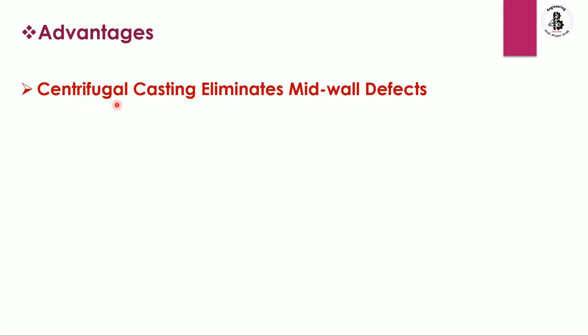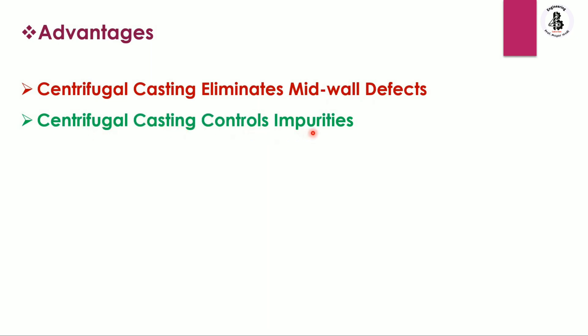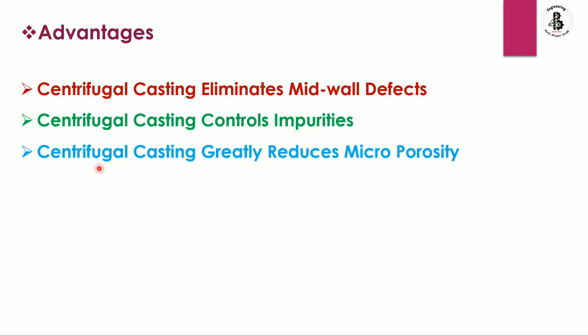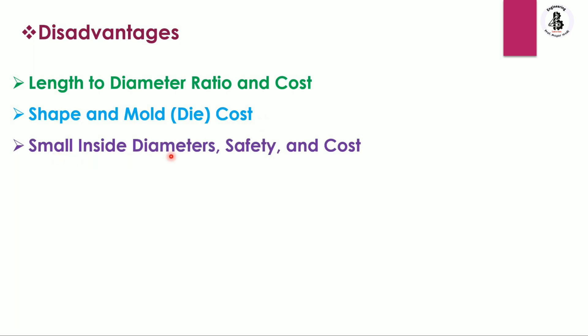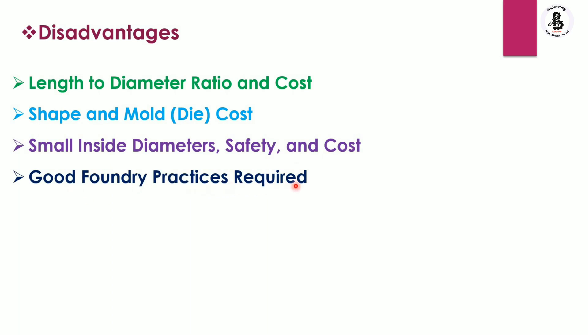Some advantages of the centrifugal casting process in general: it eliminates mid-wall defects, controls impurities reducing those found in normal casting, and greatly reduces micro-porosity. Some limitations or disadvantages include: high length-to-diameter ratio increases cost, higher mold and die costs, challenges with small inside diameters, safety concerns, and the requirement for good foundry practices and skilled labor to control the process.